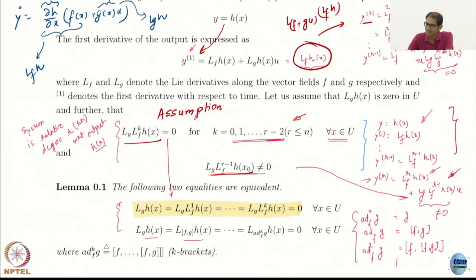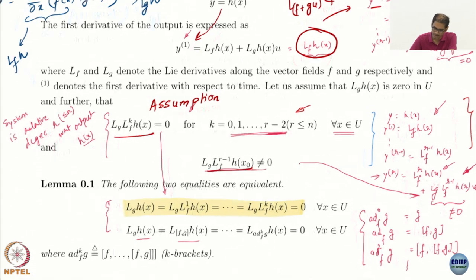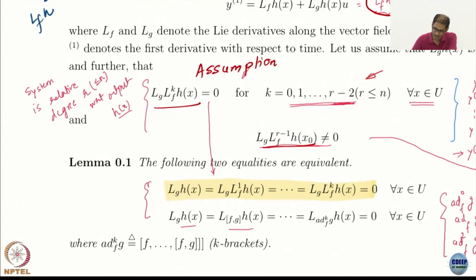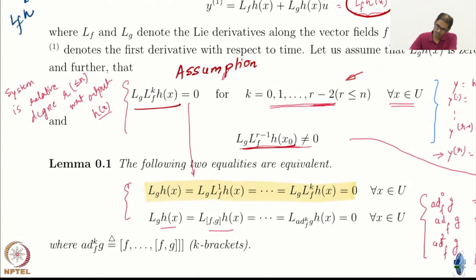In order to assess the properties of Lie derivatives, we have to prove a couple of lemmas. We will introduce one more new notation, which is the ad bracket — the ad notation — which is basically the notation for successive Lie brackets.